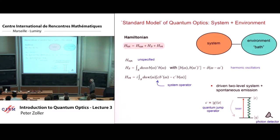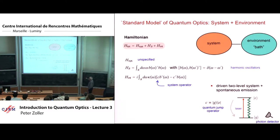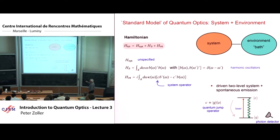The reason we get away with this description in quantum optics under Markov assumptions is that we have only weak coupling to the environment — dissipation should be weak. For a two-level system this means the optical frequency is much larger than the linewidth γ, the spontaneous emission rate. The optical frequency is 10^14 Hz, but γ corresponds to lifetimes of order 10 nanoseconds — orders of magnitude different. This weak coupling is exactly what we're interested in when constructing quantum machines where decoherence should be avoided.